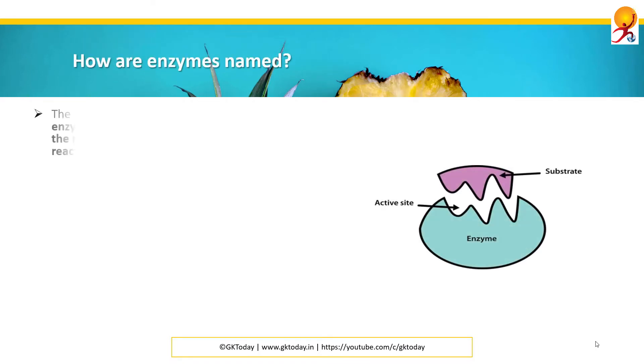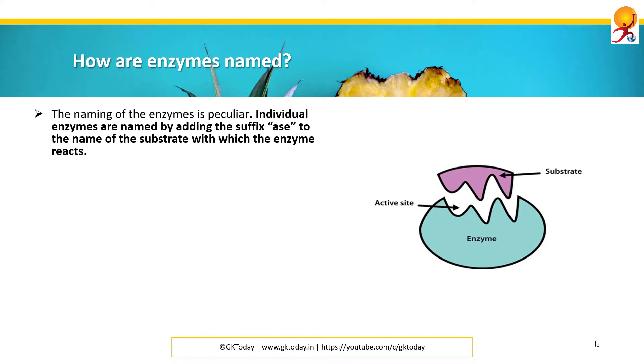Anything affecting the shape of the key would make the key unable to lock and unlock. How are enzymes named? The naming of enzymes is peculiar. Individual enzymes are named by adding the suffix "-ase" to the name of the substrate with which it reacts.